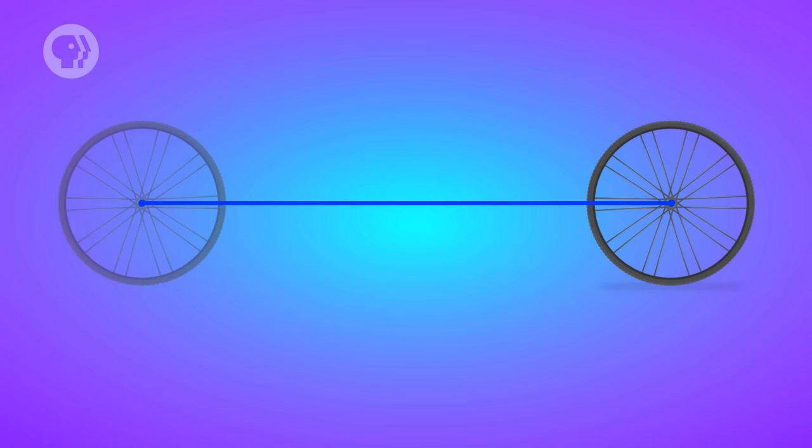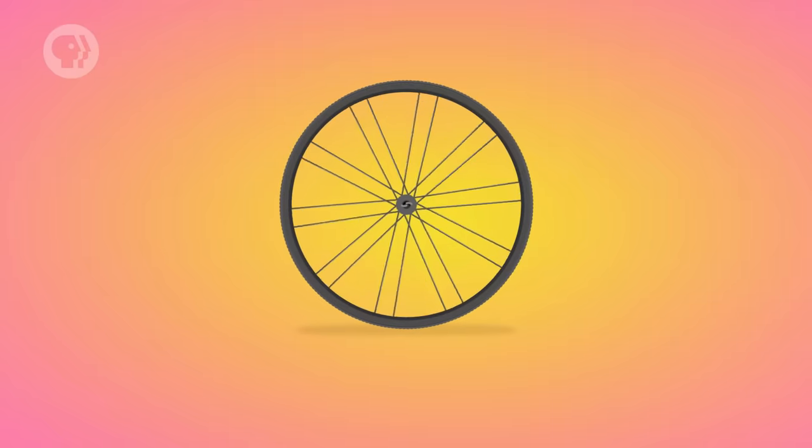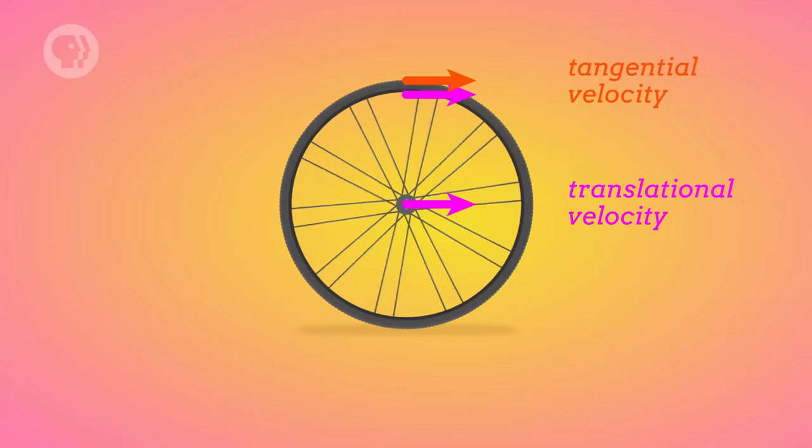Now, the time it took to move that distance was equal to the period of the motion. So the translational velocity of the center was equal to the radius times the angular velocity. Now, what about the top of the wheel? It has the same translational velocity as the center of the wheel, plus the tangential velocity that comes from the wheel's rotation. Because at the top of the wheel, the tangential velocity is pointing in the direction the wheel is rolling in.